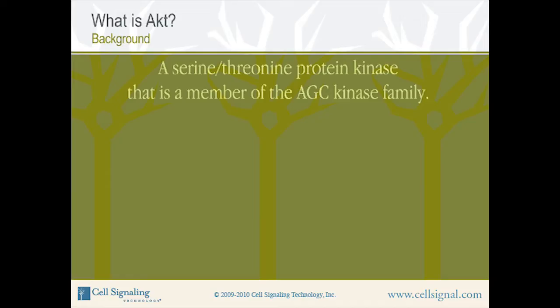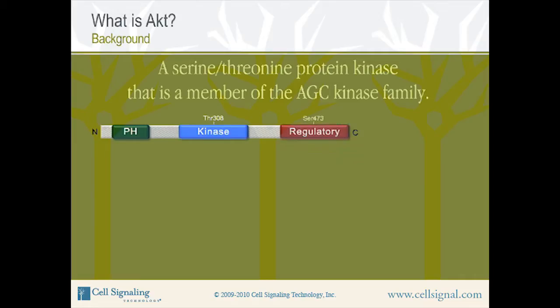AKT, like other members of this kinase family, has an N-terminal pleckstrin homology domain, also called PH domain, a conserved kinase domain, and a hydrophobic C-terminal regulatory domain and turn motif.